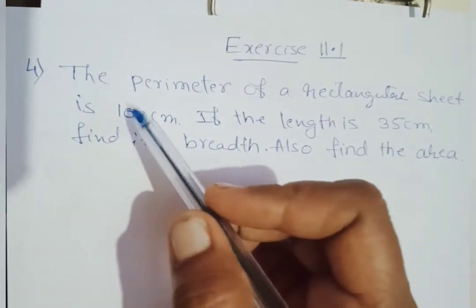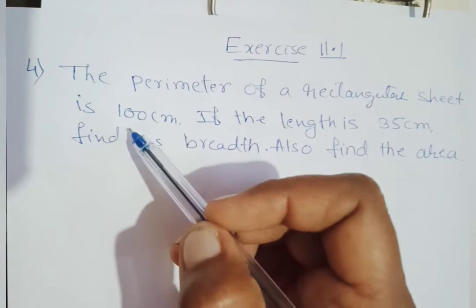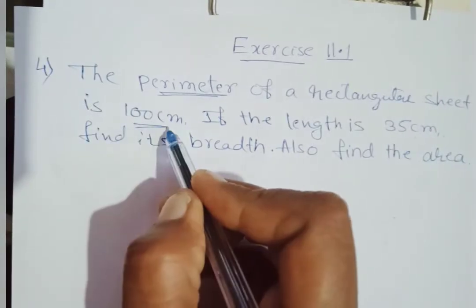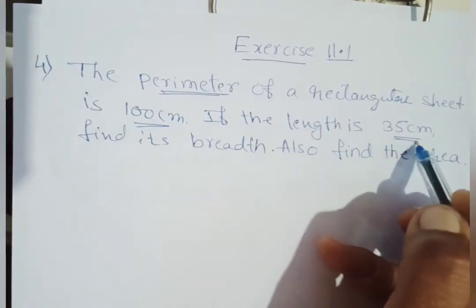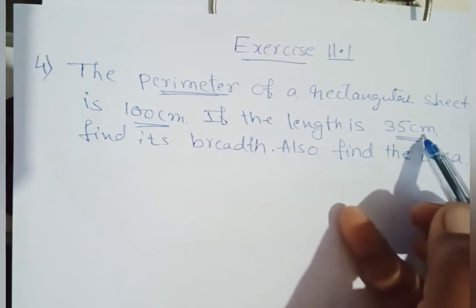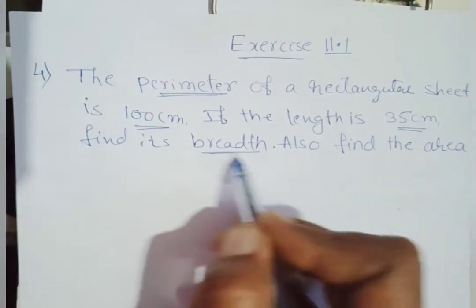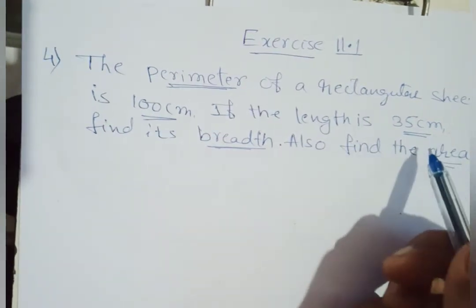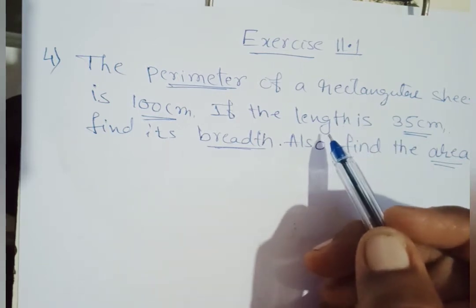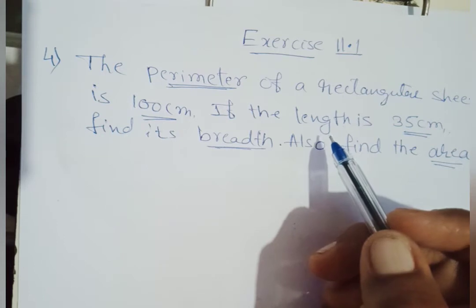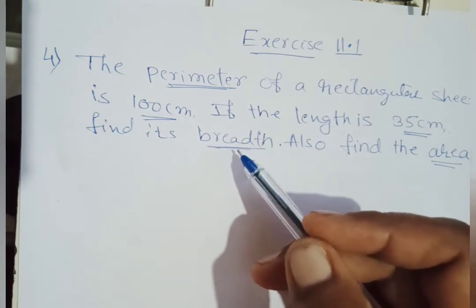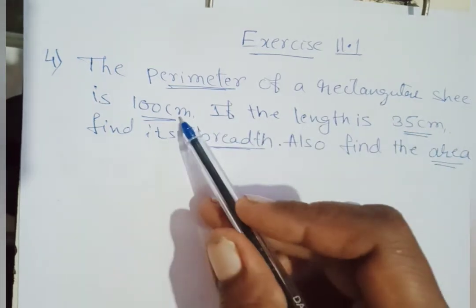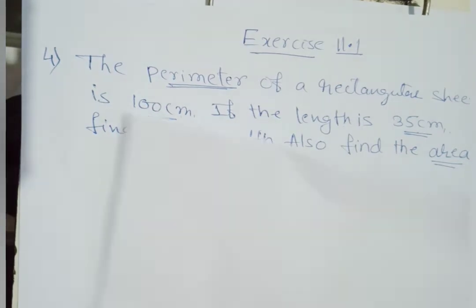This is the fourth problem in the series. The perimeter of a rectangular sheet is 100 centimeters. The length is 35 centimeters. We need to find its breadth and also the area. In the previous question, we were given the area and the length to find the perimeter. Here, the perimeter and length are given, and we need to find the breadth and area.